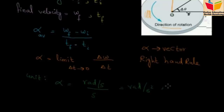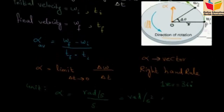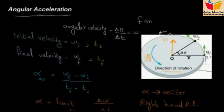The unit of angular acceleration is radians per second squared. We can also convert it into revolutions, noting that one revolution equals 360 degrees. But the standard unit is radians per second squared. Now, for the angular acceleration formula, I have considered the point P — a particle in rotatory motion around a center point.